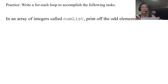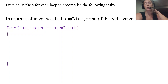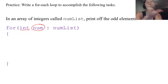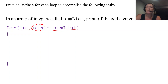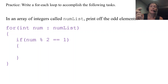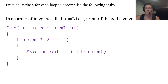Here's some practice. First: write a for-each loop to print the odd elements of an integer array called numList. We start with 'for (int num : numList)'. This can be called anything — it's just a local variable. Inside the loop, we check if the current element is odd, and if it is, we print it off. That's the code to use a for-each loop to print off the odd elements.